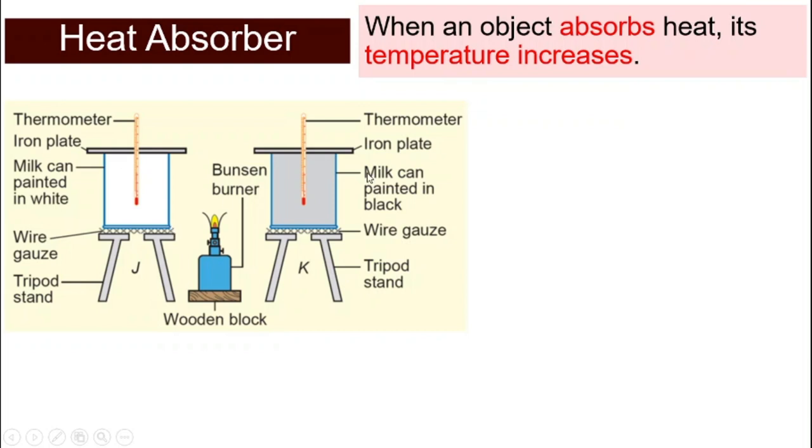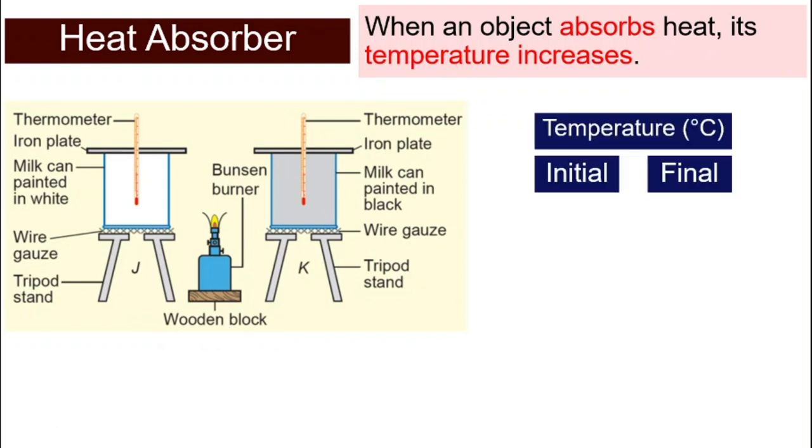We have two milk cans. For milk can J, we paint it in white, and milk can K, we paint it in black. So we have one in white and one in black. And we will put in a thermometer to measure the temperature inside the milk can. Then we set up a Bunsen burner in the middle.